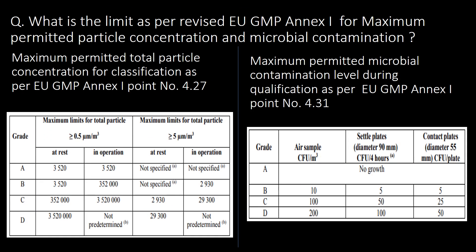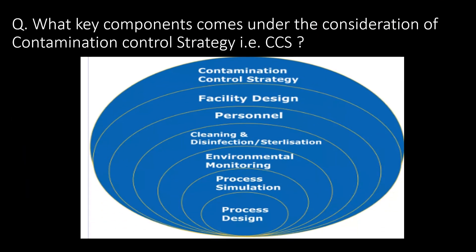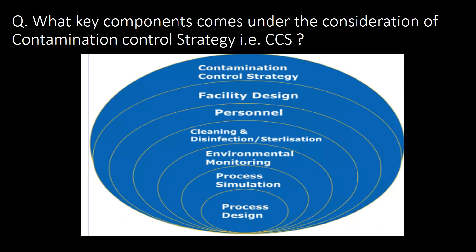What is the limit as per revised UGMP Annex 1 for maximum permitted particle concentration and microbial contamination? On screen you can see the maximum permitted total particle concentration for classification as per UGMP Annex 1 point 4.27, and the maximum permitted microbial contamination level during qualification as per UGMP Annex 1 point 4.31.